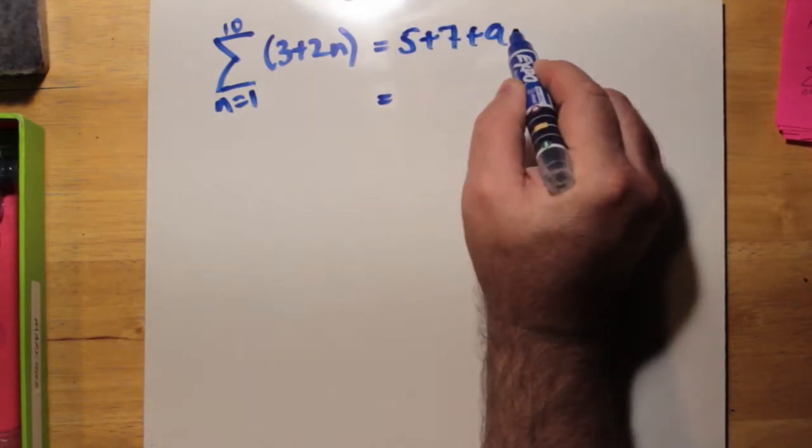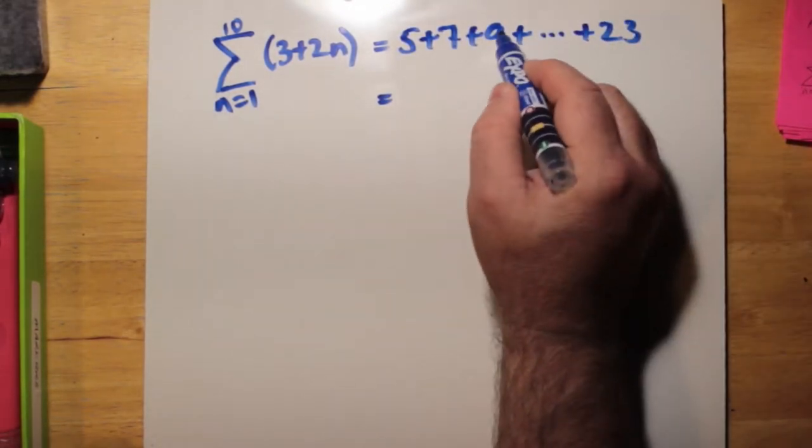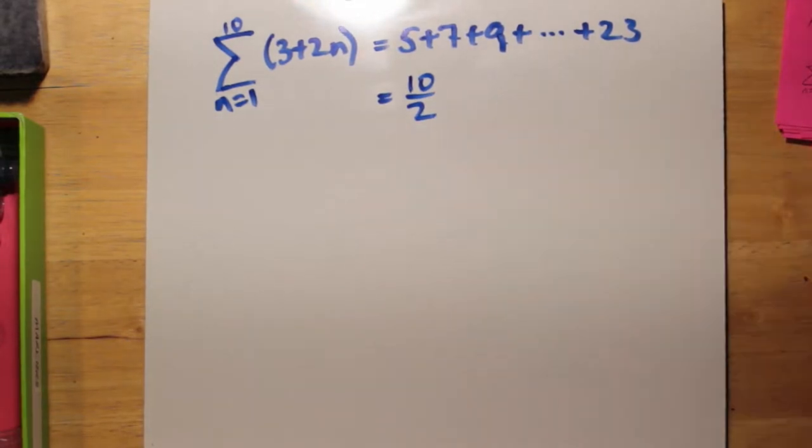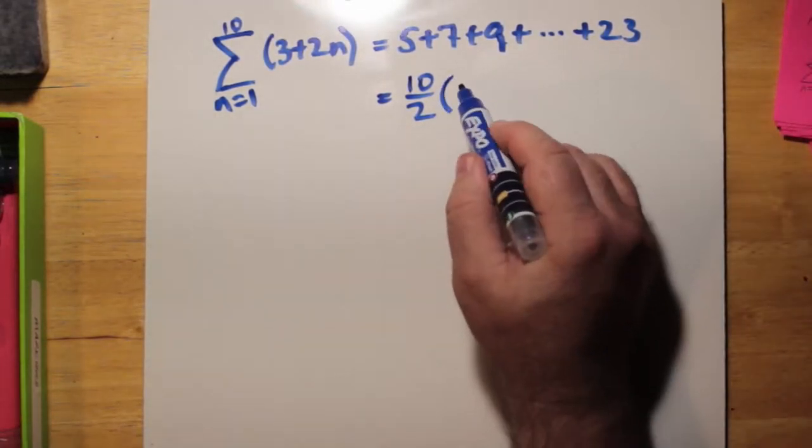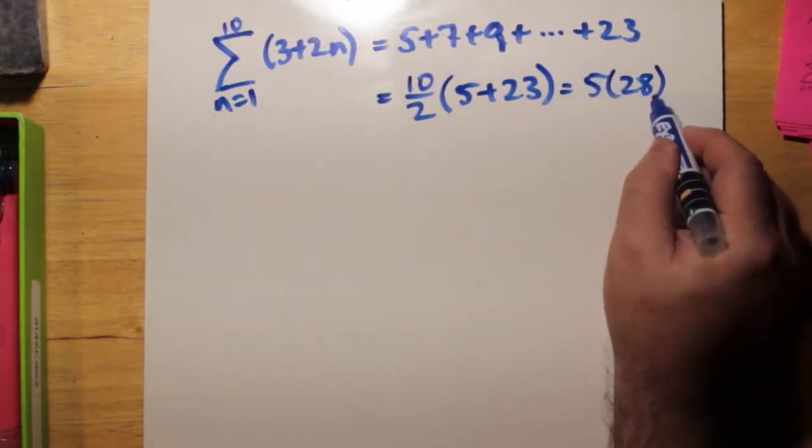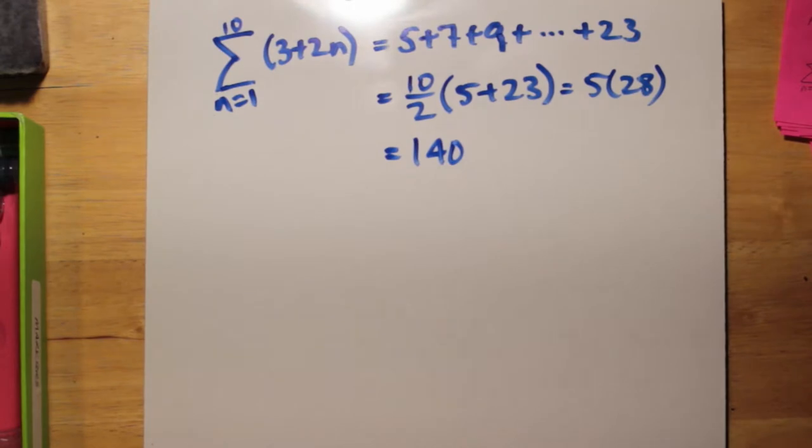Here's another way of doing it. You can actually use that same shortcut formula. There's 10 terms divided by 2. That's 10 over 2, plus the sum of the first and last term. That's 5 plus 23. That makes 5 times 28. We still get 140.